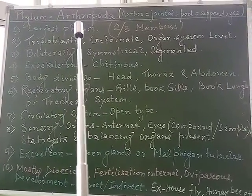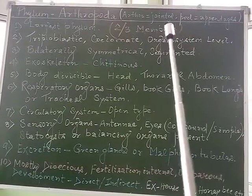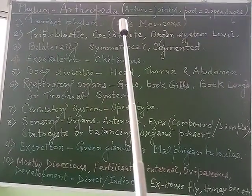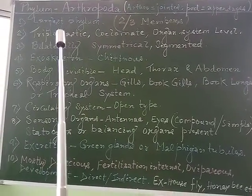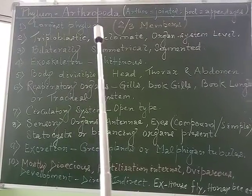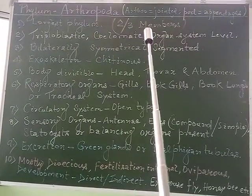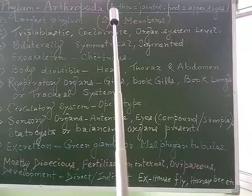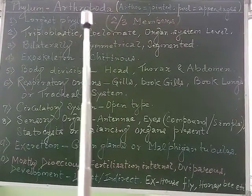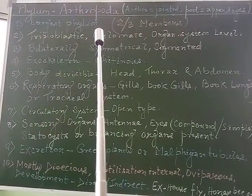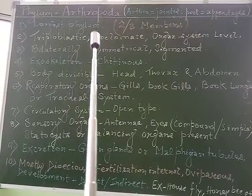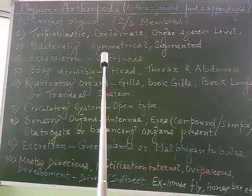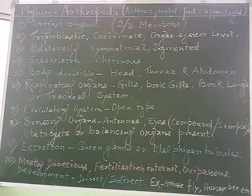Arthropoda is made up of two words: 'arthro' meaning jointed, and 'pores' meaning appendages. So arthropods have jointed appendages. Regarding numbers, they are the largest phylum within the animal kingdom — around two-thirds of all named living species on Earth belong to the group Arthropoda. They exist in very great numbers upon the planet.